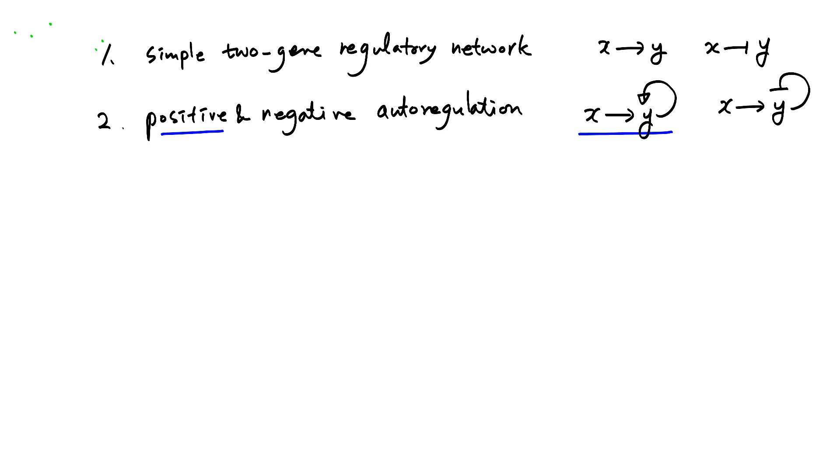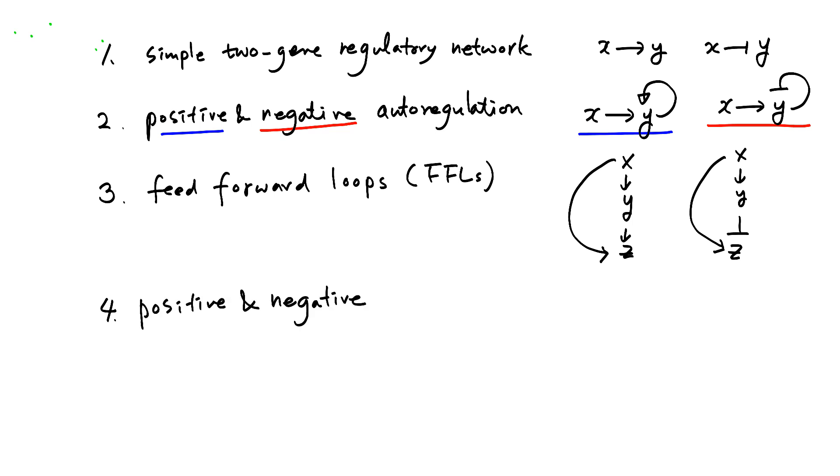There's inhibition, and this is negative autoregulation. We will also look into feed forward loops or FFLs. We have three genes: X, Y, and Z. X activates Y, Y activates Z, but at the same time X activates Z. Or you may have X activates Y, Y inhibits Z, and X activates Z directly.